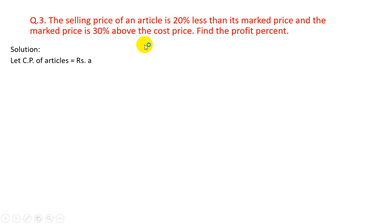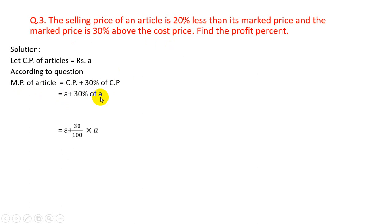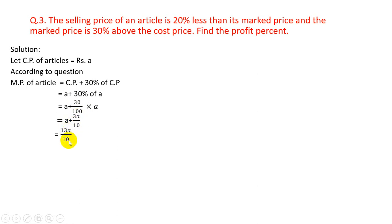Solution. Let CP of article = Rs.A. According to the question, MP of article = CP + 30% of CP, because the marked price is 30% above the cost price. So MP = A + 30% of A = A + 30/100 × A = A + 3A/10. Taking LCM, MP = 13A/10.